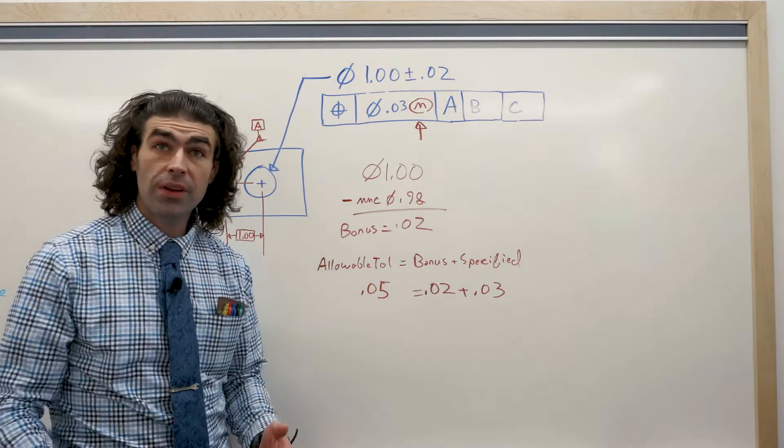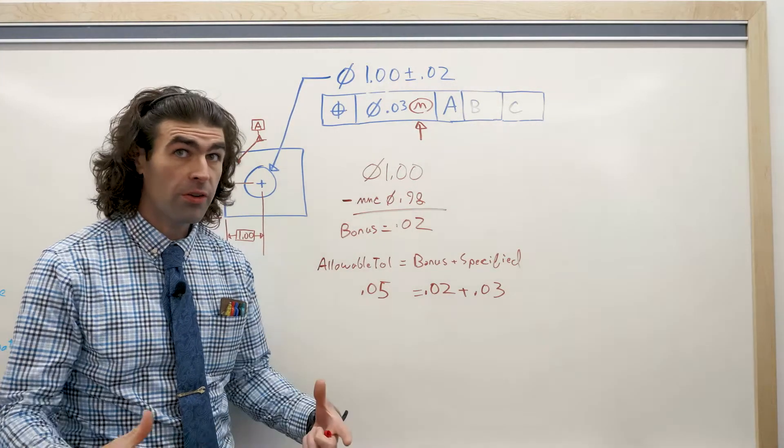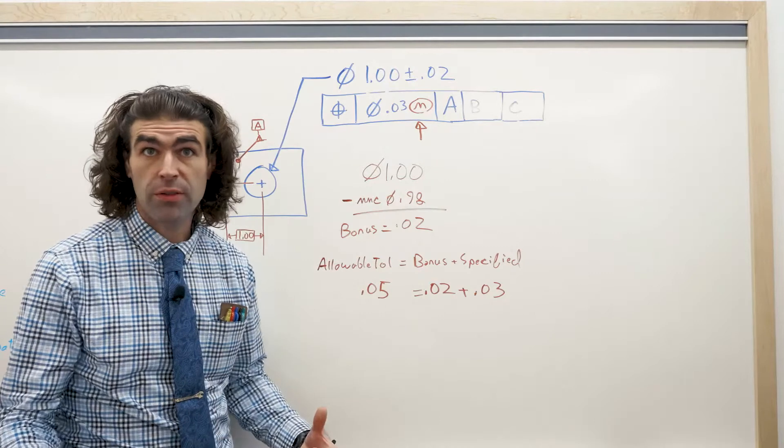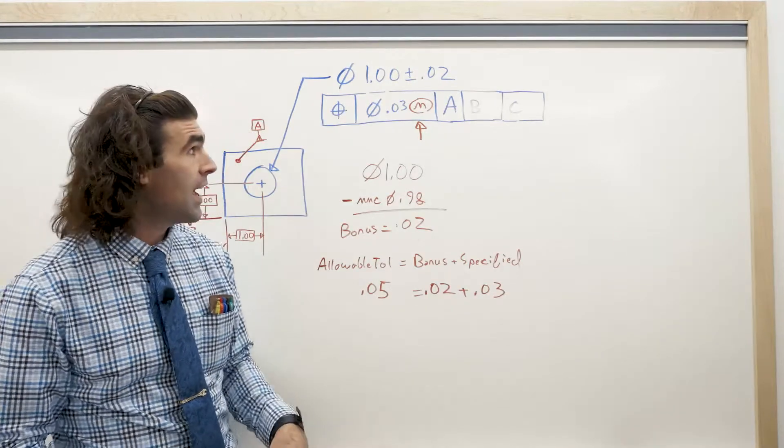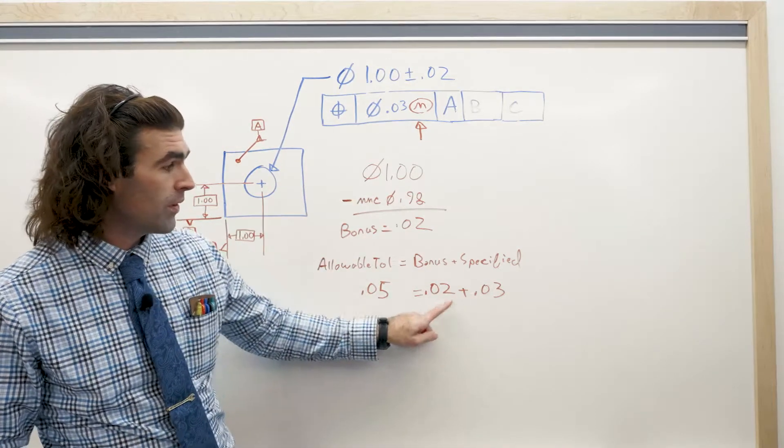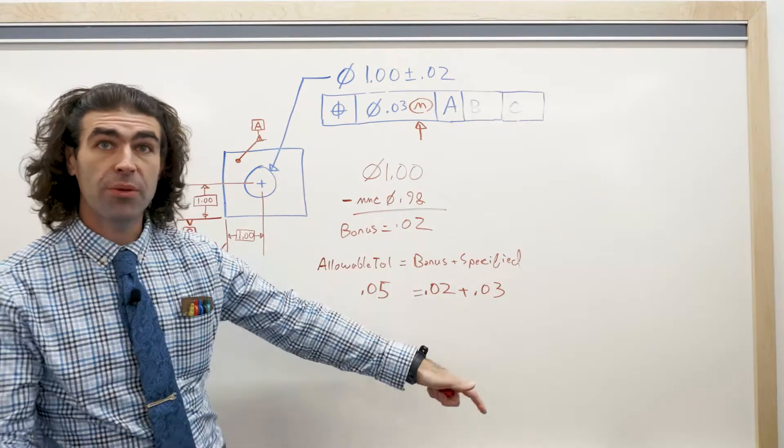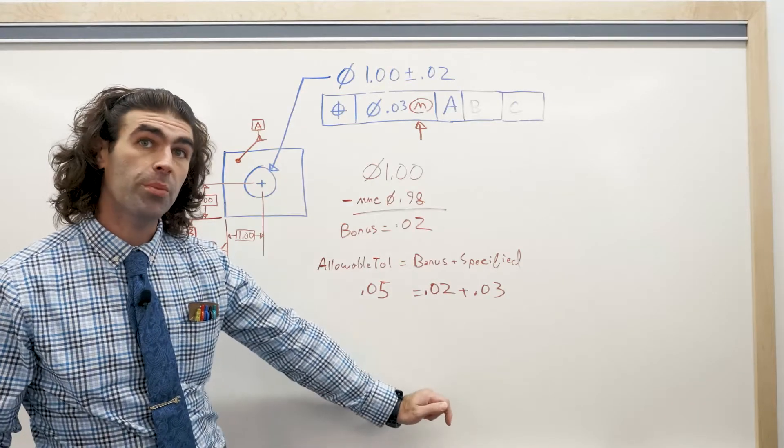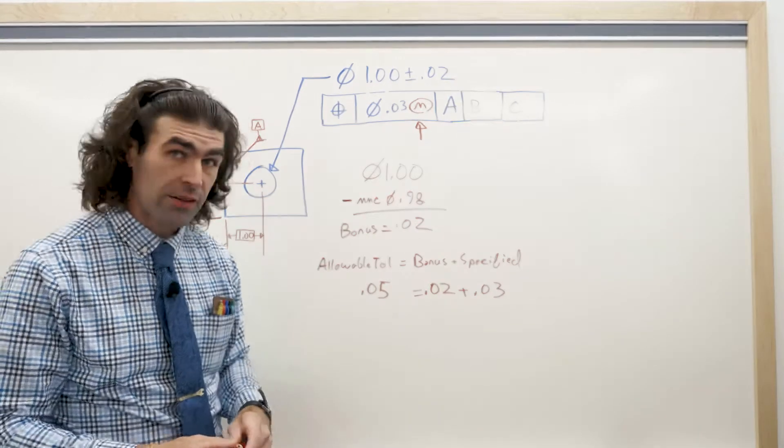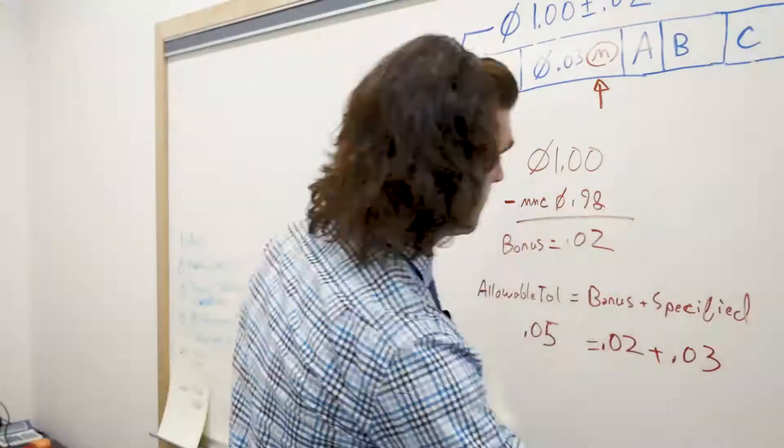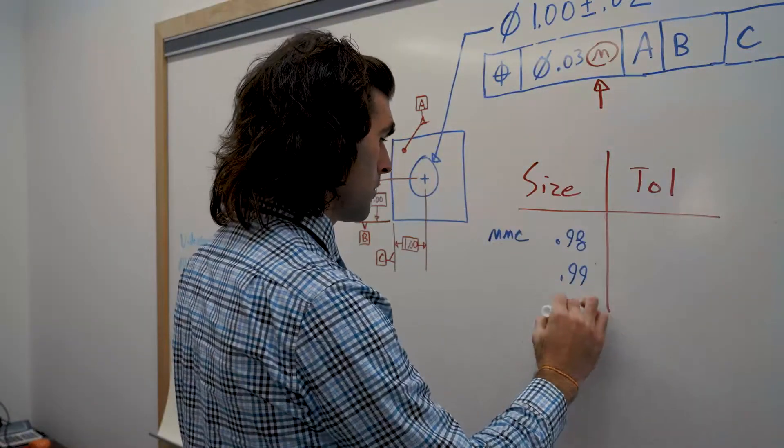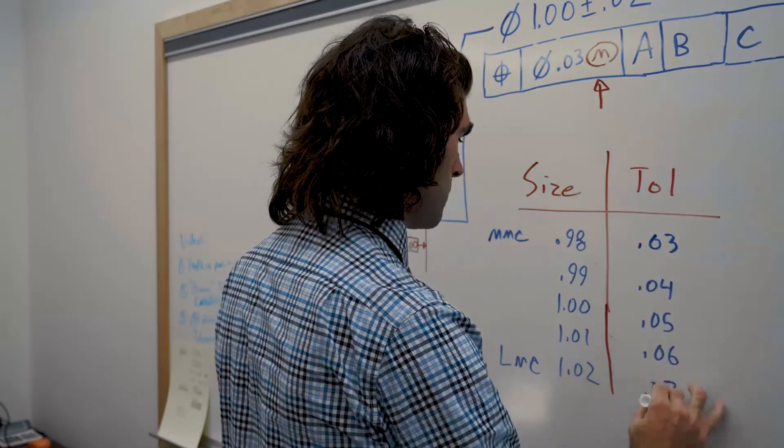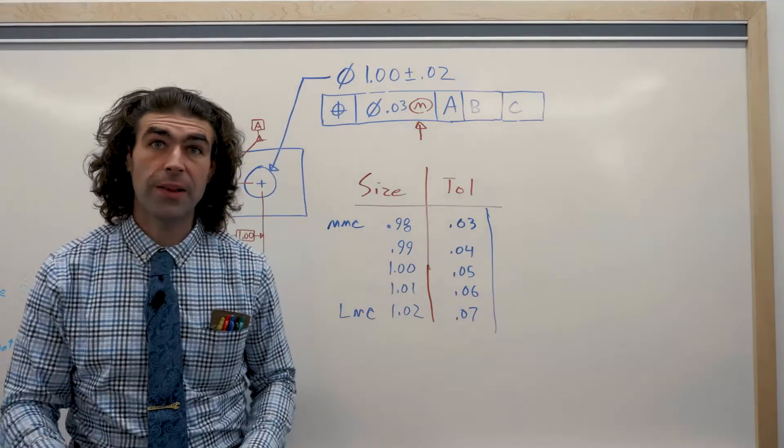If the hole comes in at 1.02, so the largest it can be, the furthest away from MMC it gets, you would have 40 thousandths of bonus plus specified, you'd have the most positional room to work with. Now, I like to draw a quick chart.